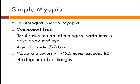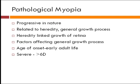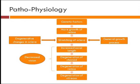In simple myopia, the refractive error seldom exceeds 8 diopters and there are no degenerative changes in the retina. Then comes pathological myopia — as the name suggests it is more progressive in nature and is related to heredity-linked growth of the retina. The age of onset is in earlier adult life and it is severe because the refractive error in these cases is more than 6 diopters. Genetic factors lead to excessive growth of the retina and stretching of the sclera, increasing axial length, ultimately causing degeneration of the choroid, retina, and vitreous.